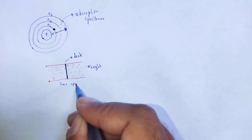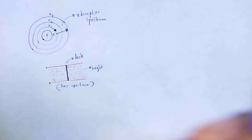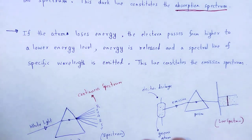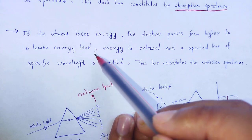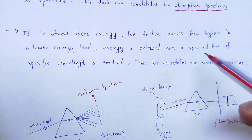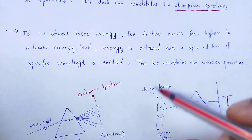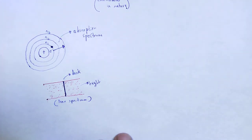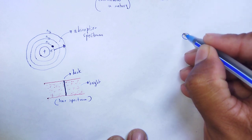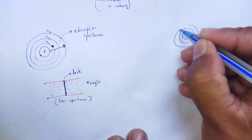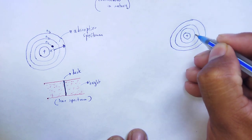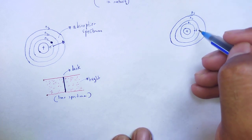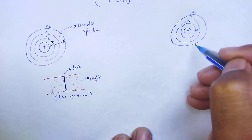Next, if the atom loses energy, that means the electron passes from a higher to a lower energy level, and energy is released. A spectral line of specific wavelength is emitted, and this line constitutes the emission spectrum. We notice the electron moving from the higher energy level n2 or n3 down to the lower energy level n1.